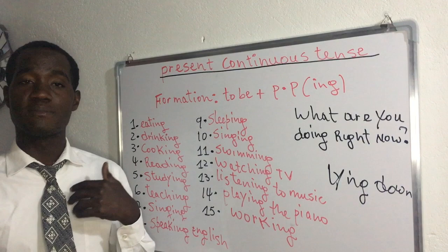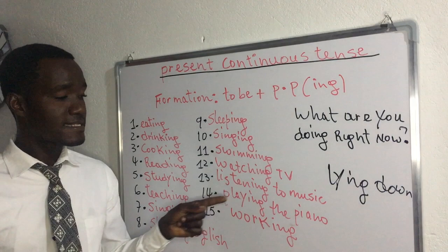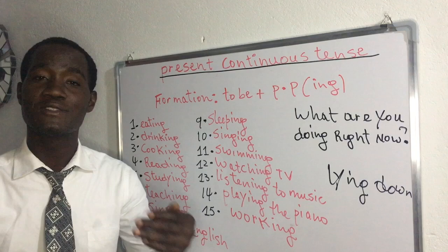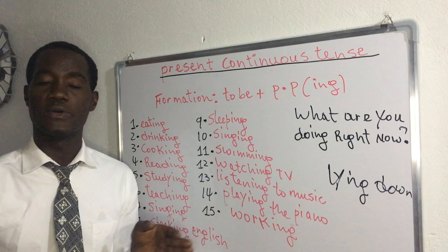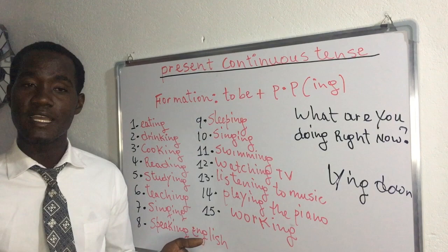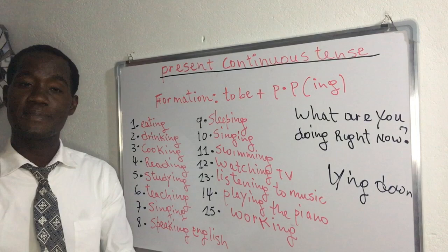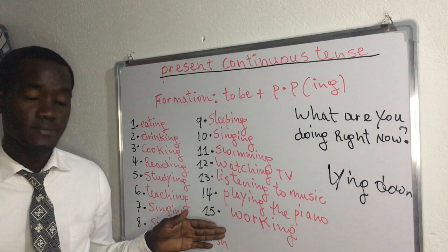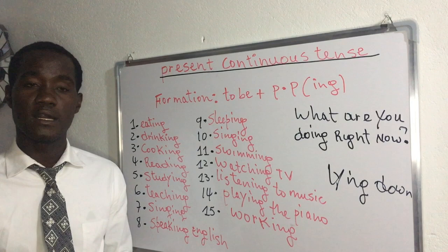We have 'listening' — ki se ekoute. Si m'ap koute mizik nan moman an: 'Hey, what are you doing?' — I am listening to music. We also have 'playing' — 'playing the piano.' I am playing the piano. Hey, what are you doing? — I am playing the piano. I am a pianist.